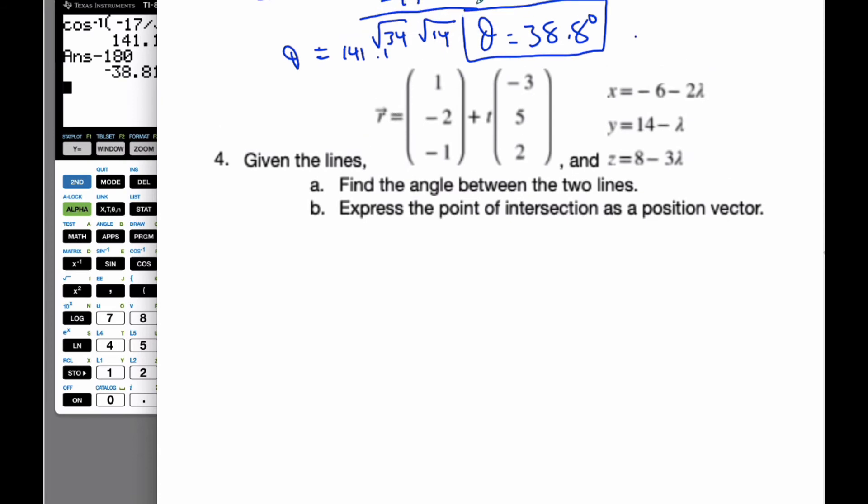Pulling this down, I want to find the point of intersection. If I'm going to find the point of intersection, that means the x value of this first line has to be the same as the x value of the second line.